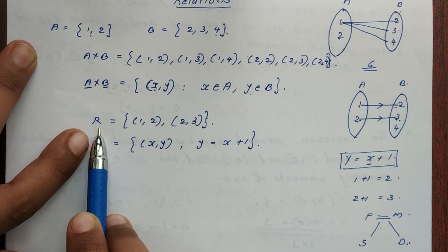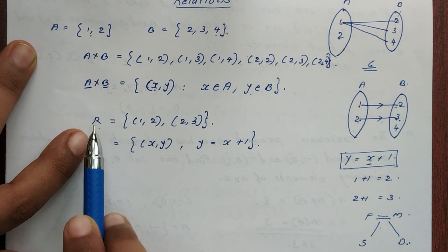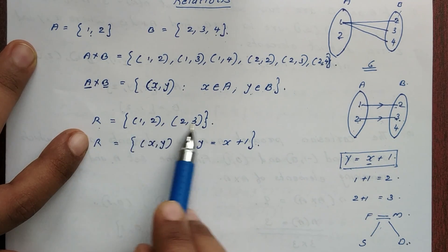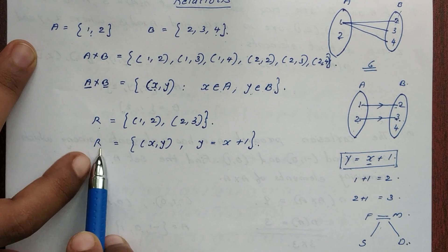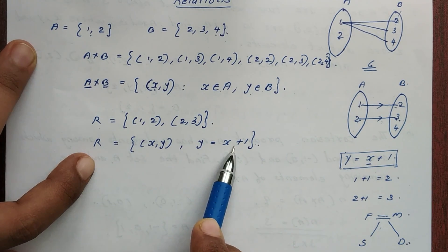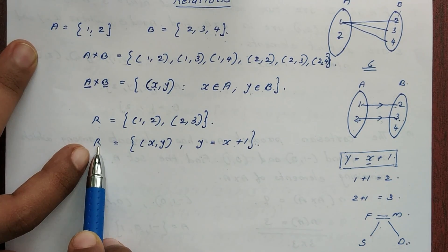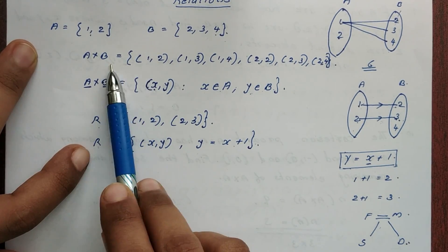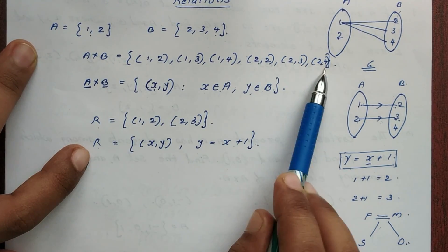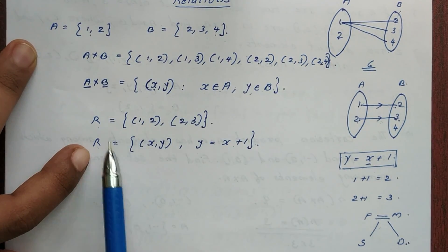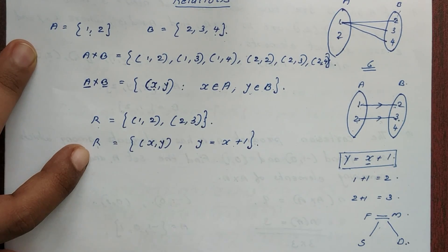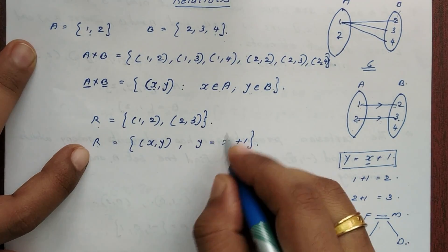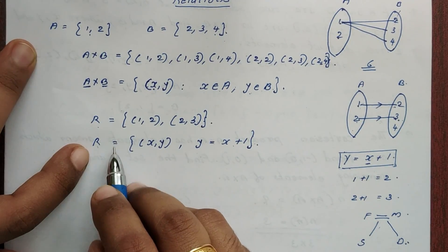Relation R can be written in roster form or set builder form. A cross B has 6 ordered pairs. A relation has fewer elements — a relation is a subset of A cross B.